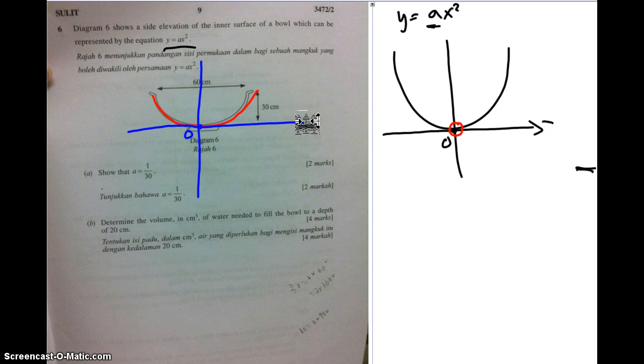In order to find A, the easiest way to find A is that we substitute one of the coordinates of the curve. Do you see a red color curve here? I want to find a coordinate because here is 30 cm, here is 30 cm. So I know that this corner, this coordinate, is actually 30 and 30.